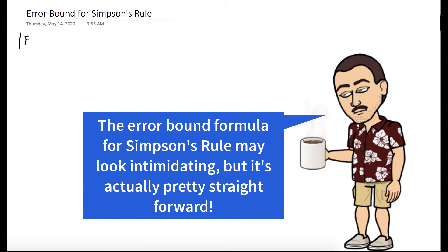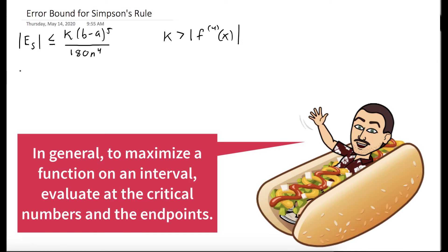We know the error with the Simpson's rule is bounded above by k times b minus a to the fifth over 180 n to the fourth. And here, k is the bound for how large the fourth derivative of our function could be. So you would need to find four derivatives of our function and then maximize that.